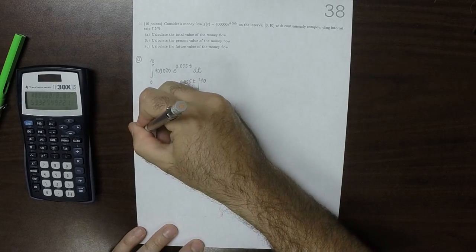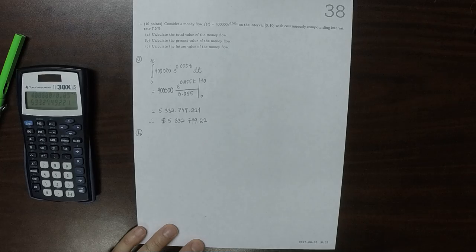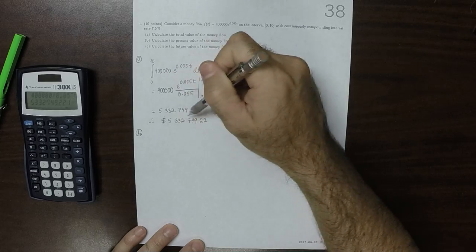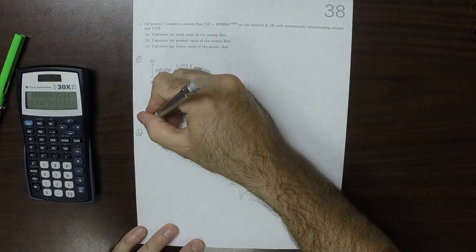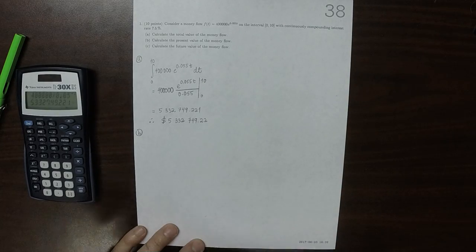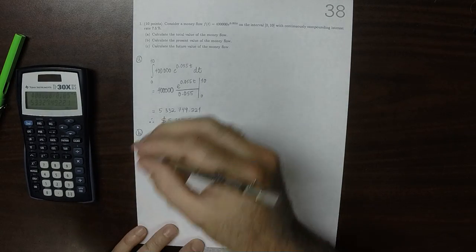For part B, the present value of the money flow. We're going to take all of this money, this is how much money you'd have at the end, and we're going to transport all those bits of money to the very beginning from where they were obtained and see what the value is.